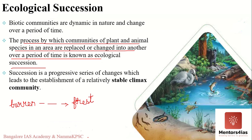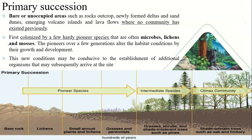We will distinguish ecological succession into two types: primary succession and secondary succession. Primary succession occurs essentially in lifeless areas, while secondary succession occurs in areas where a community previously existed but has now been removed. We will understand more as we discuss each type in detail.